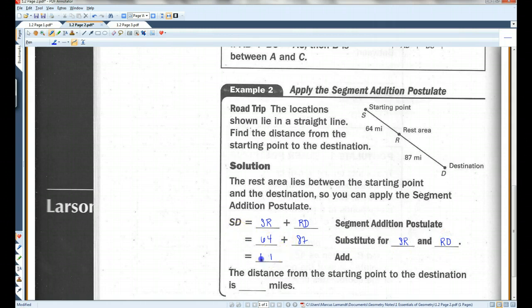64 plus 87, let's see here, that's 151 I believe. So the distance from the starting point to the destination is 151 miles.